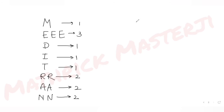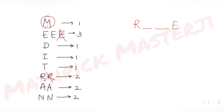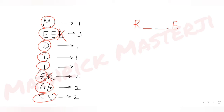The four-letter word already has the first letter as R and the last letter as E, so one R and one E are already selected. We just need to fill the two middle positions. The remaining letters available are: one M, two E's, one D, one I, one T, one R, two A's, and two N's.